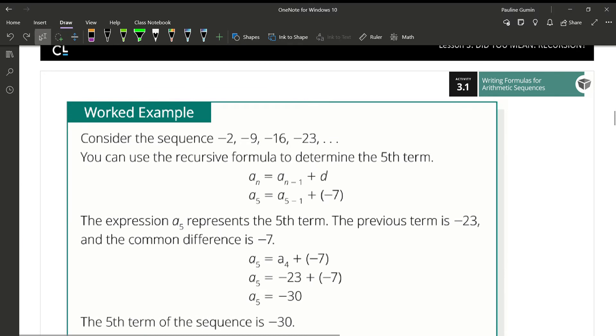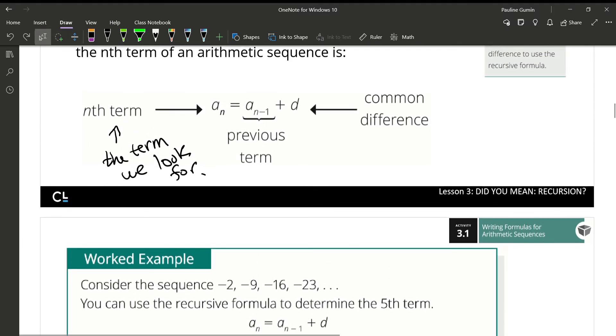For example, let's say we have these four terms: negative 2, negative 9, negative 16, and negative 23, and we wanted to find the fifth term. This is the first term, the second, the third, and the fourth. In order to find the fifth term, we need to find the fourth and add the common difference to it.